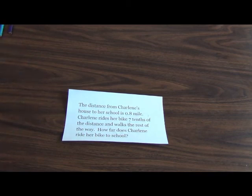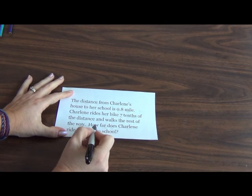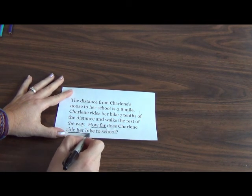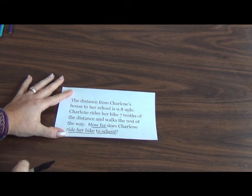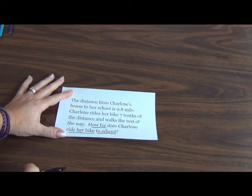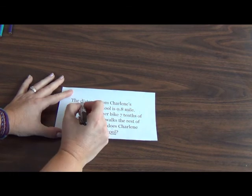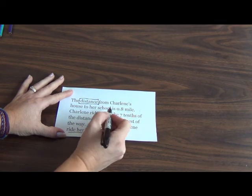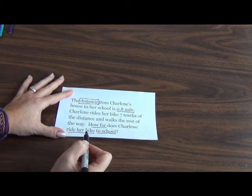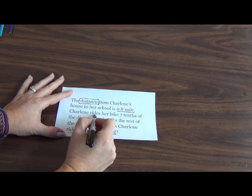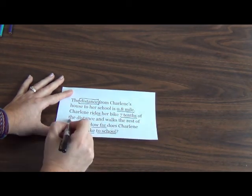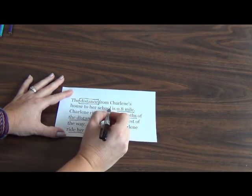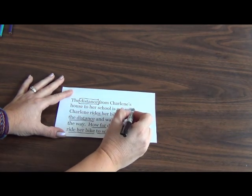A couple of things I want to look at for starters: I look at the end of this question and I notice that it says how far does Charlene ride her bike to school. I look back at the beginning and it says the distance from Charlene's house to her school is 8/10 of a mile. Charlene rides her bike 7/10 of the distance.